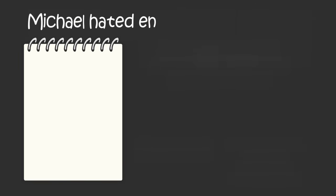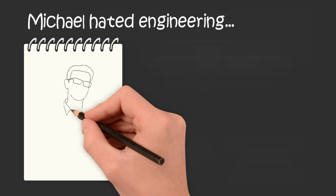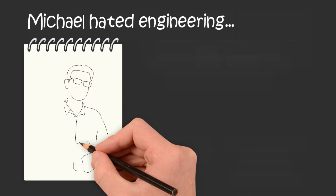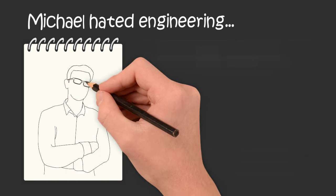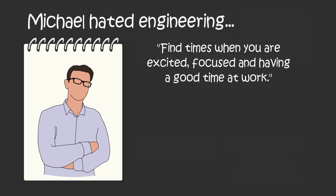In the book, there's a civil engineer named Michael. Michael hated his job and he wanted to change. His family recommended that he get an MBA and go into finance. But authors Bill Burnett and Dave Evans recommend that Michael reflect on his day and find times when he was excited, focused, and having a good time at work and write down exactly what he was doing during those times.